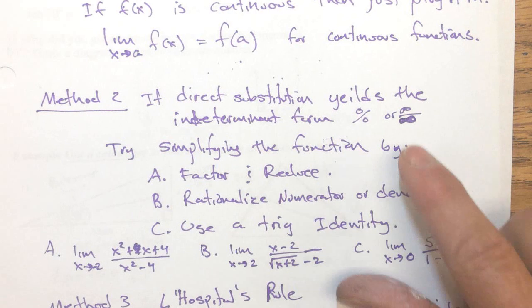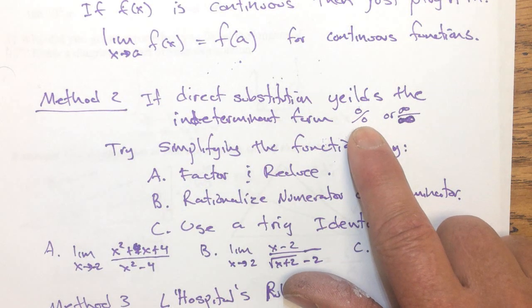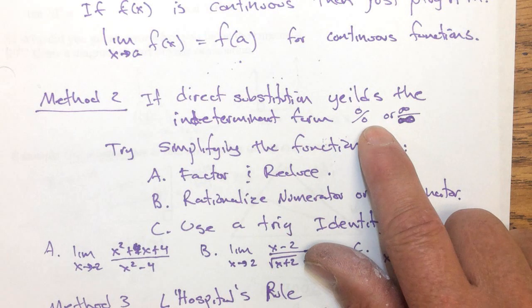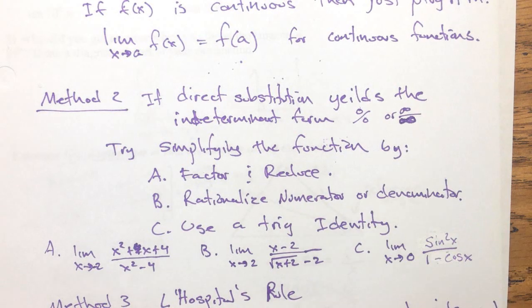But the indeterminate form, zero divided by zero, is called indeterminate because we're not sure what's going on there. Or infinity divided by infinity.